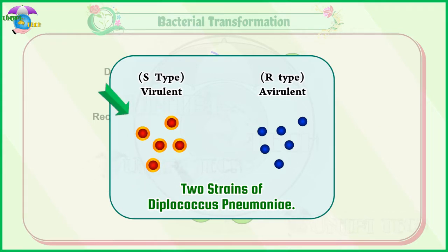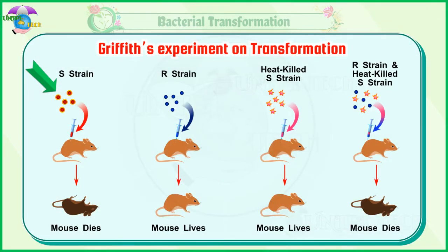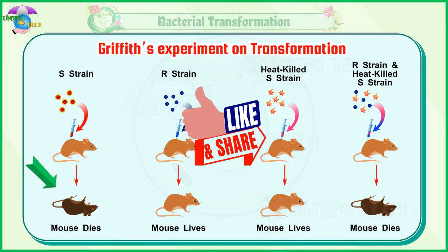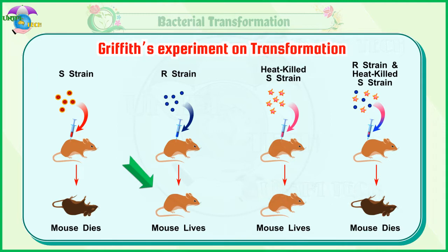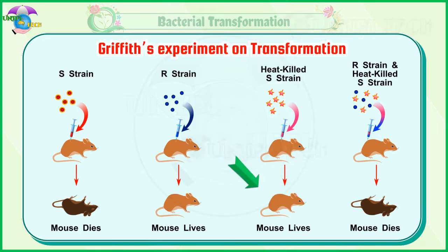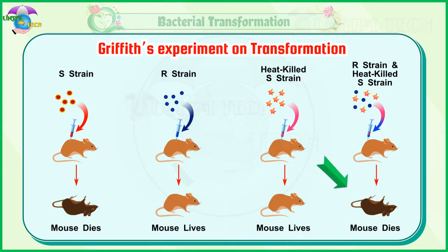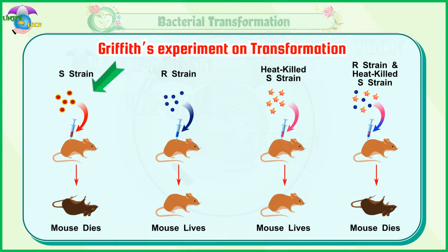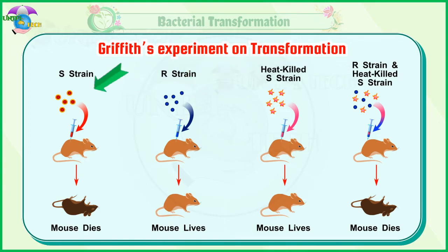Two strains of this bacterium are present: one strain produces smooth colonies and is virulent (S-type), and the other is the R-type. When S-type cells were injected into the mouse, the mouse died. When R-type cells were injected, the mouse survived. When heat-killed S-type cells were injected, the mouse did not die. When a mixture of heat-killed S-type cells and R-type cells were injected into the mouse, the mouse died. The avirulent rough strain of Diplococcus had been transformed into S-type cells.